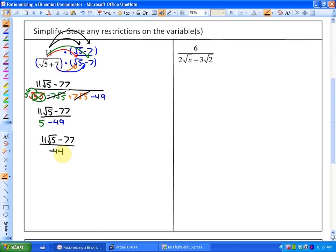However, in this particular case, you'll see that we can divide those all by 11. Or in other words, if I wanted to split this into two separate fractions, this is 11 root 5 over negative 44, minus 77 over negative 44. And we can divide all of these reduced by 11, so it becomes those reduced to that. And this reduces to negative 7 over negative 4.